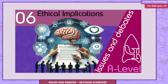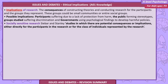Ethical implications of research, studies and theory. The implications of research are the consequences of constructing theories and conducting research for the participants and the groups they represent — these could be small communities or entire social groups. Possible implications include: participants suffering due to a lack of protection from harm; the public forming stereotypes; groups studied suffering discrimination; and governments using psychological findings to develop harmful policies. Socially sensitive research, as defined by Sieber and Stanley, involves studies in which there are potential consequences or implications either directly for participants or for the class of individuals they represent.